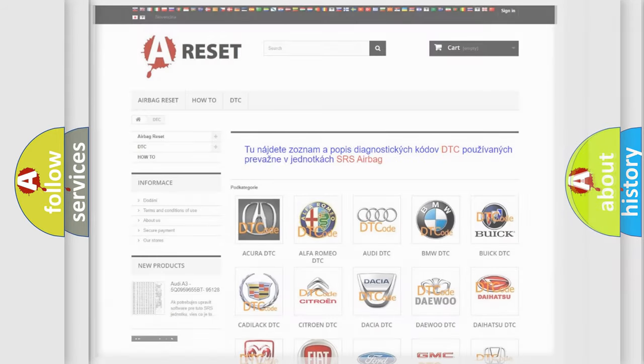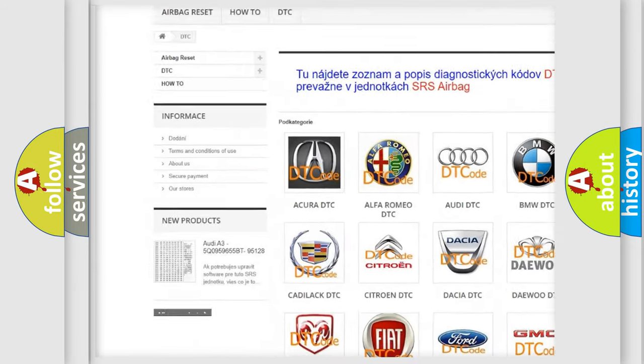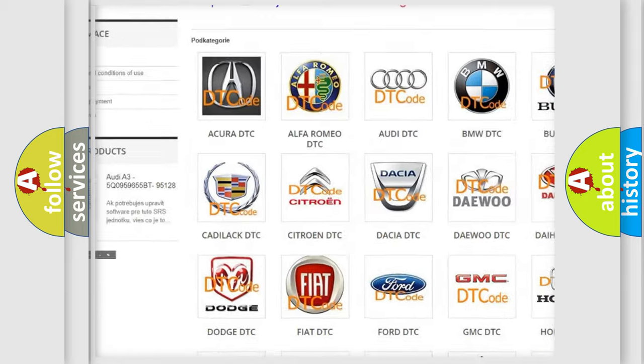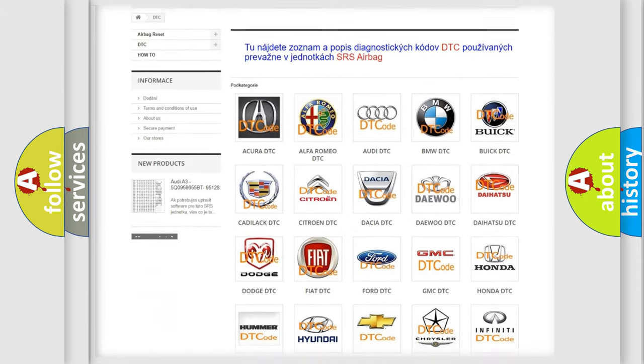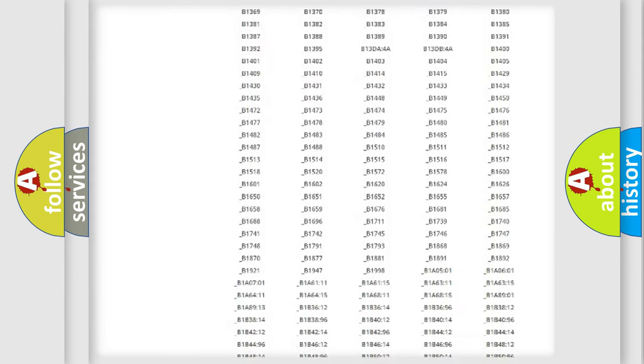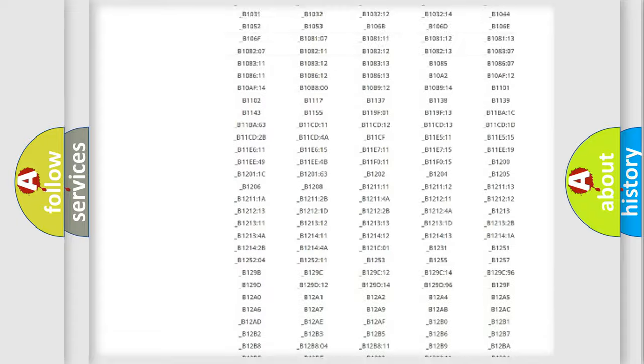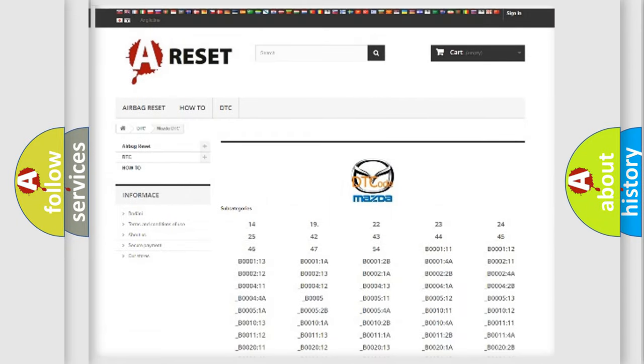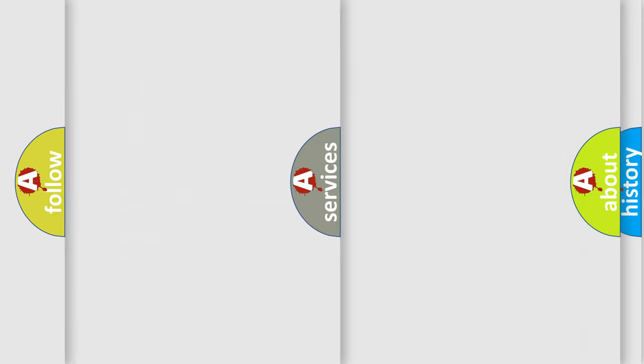Our website airbagreset.sk produces useful videos for you. You do not have to go through the OBD2 protocol anymore to know how to troubleshoot any car breakdown. You will find all the diagnostic codes that can be diagnosed in Mazda vehicles, and many other useful things.